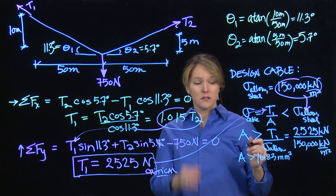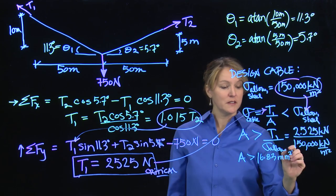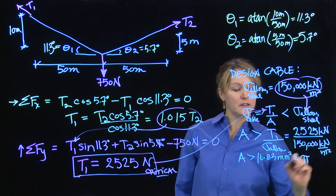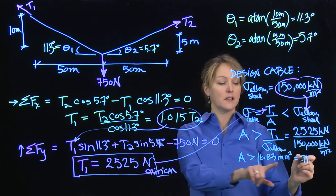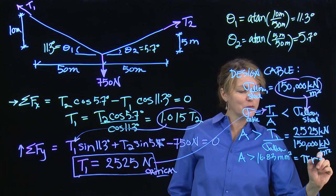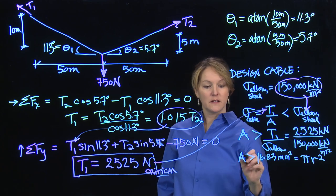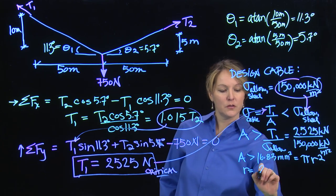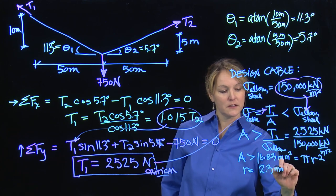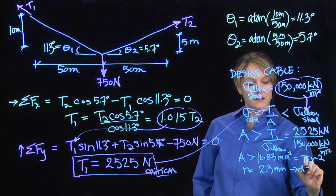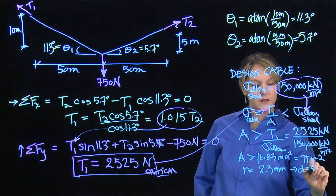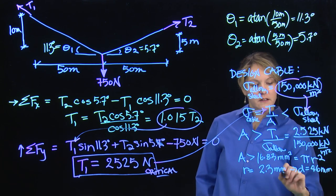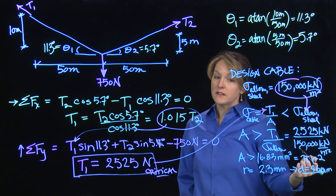I'm using a round cable out of steel, that's my assumption. So I know that is equal to the cross—the area of a circle is pi r squared, where r is the radius. So I could solve for the radius. And the radius we find is 2.3 millimeters, which means that my diameter is 4.6 millimeters. This is the minimum required diameter.